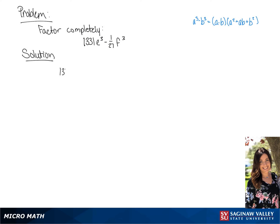We are going to factor 1,331e cubed minus 1/27th f cubed. Our a value is going to be the cubed root of 1,331e cubed, which is 11e.